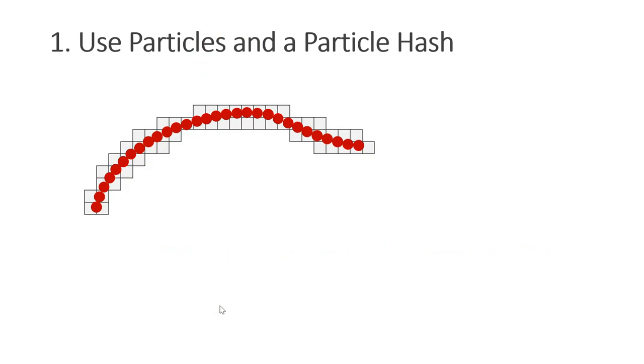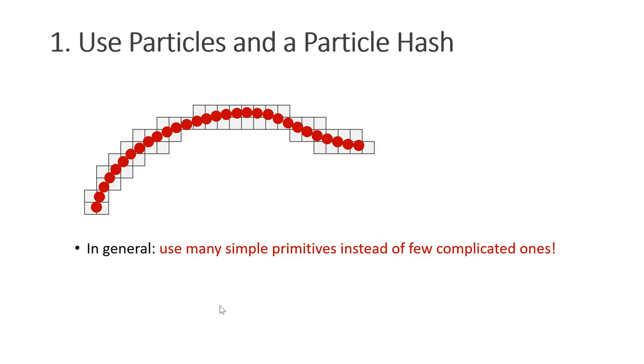The first trick is to use simple particles and a particle hash for collision detection. My general advice is to use as many simple primitives as possible instead of just a few complicated ones. This makes the simulation much simpler. You get more degrees of freedom in a simulation and higher fidelity. Since we use simple particles, we can use the simple hash for uniform particles for collision detection. I introduced it in tutorial number 11.